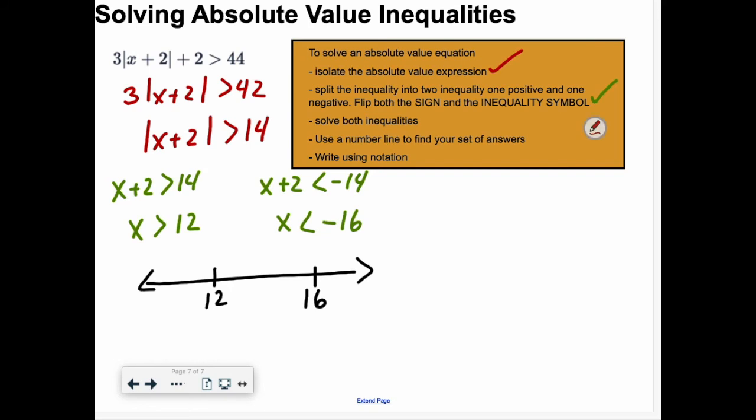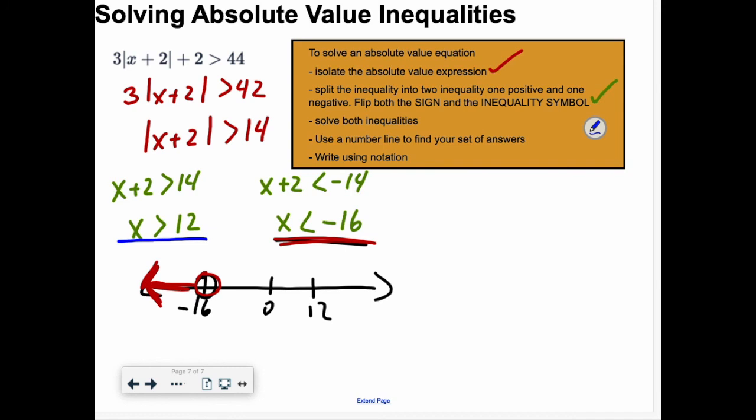I got my 12. I got my negative 16. Zero is somewhere in the middle. Let's do this. x is less than negative 16. Open circle, because it's less than not less than or equal to. And the arrow goes off this way. Let's do this one. x is greater than 12. Open circle, because it's greater than not greater than or equal to, goes off this one. You'll notice that these two arrows don't overlap. That's perfectly fine.